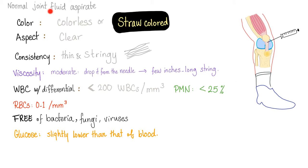So what does the normal look like in joint fluid aspiration? Color, it should be colorless or straw-colored. Aspect or clarity, it should be clear. Consistency, thin and stringy. Viscosity, moderate. White blood cells, less than 200 white blood cells per cubic millimeter. And the neutrophils or the PMN should be less than 25%. Red blood cells, 0 to 1. Free of bacteria, fungi, or viruses. Glucose, slightly lower than that of the blood.